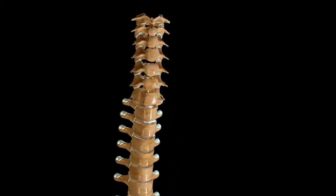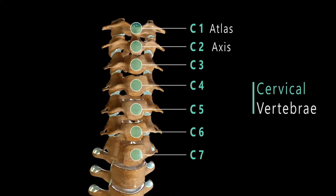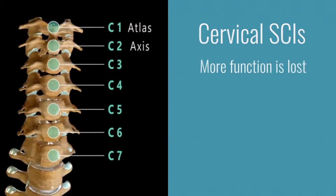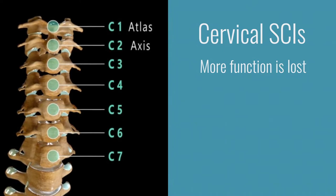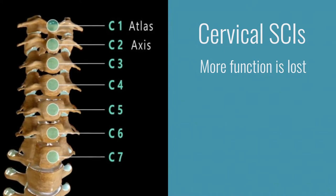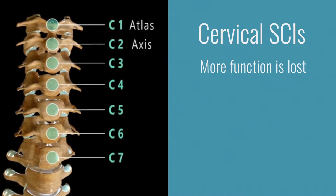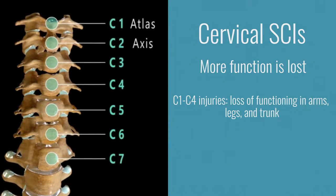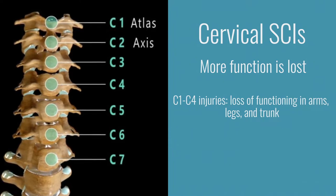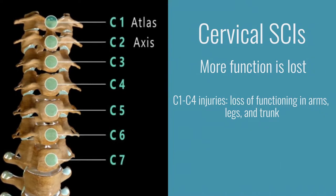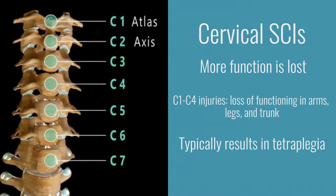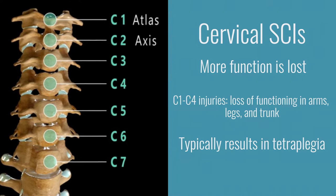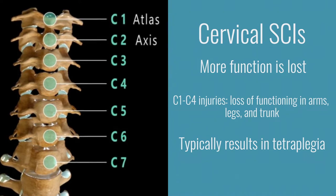The first seven vertebrae of the spinal cord, located in the neck, are the cervical vertebrae. A cervical SCI results in more function being lost, as these vertebrae are higher up on the spine and therefore more of the spinal cord will be unable to send and receive signals. Injuries to the C1 to C4 vertebrae are the most severe, as they can impair function to the arms, trunk, and legs. Individuals with cervical SCIs will typically be tetraplegic, meaning all four limbs are paralyzed, and may require assistance with everyday activities or 24-hour care.